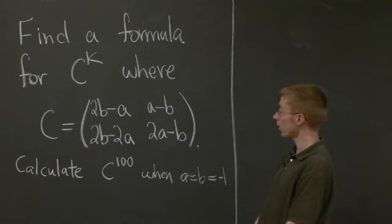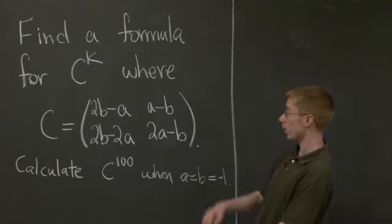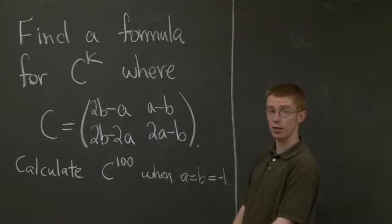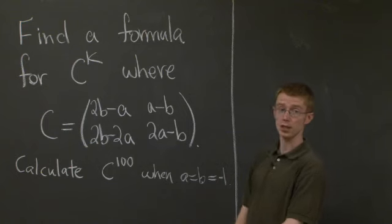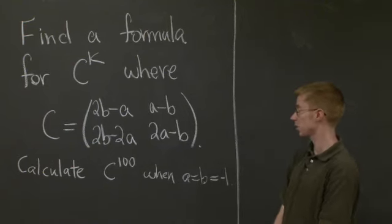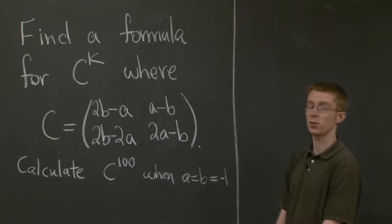Our problem is first to find a formula for the k-th power of this matrix C. This is a 2 by 2 matrix that depends on variables A and B. And the second part of our problem is to calculate C to the one hundredth in the special case where A and B are negative 1.